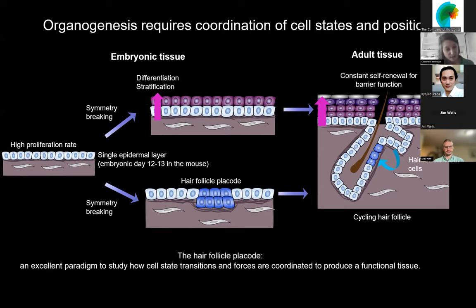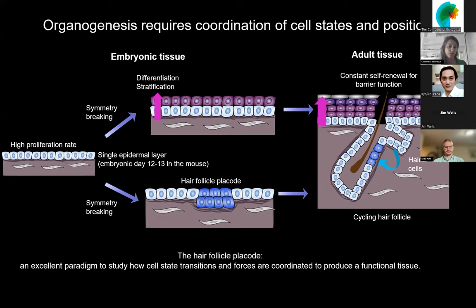The skin specifies around embryonic day 9, where at the beginning it's one homogeneous layer of epithelial cells lying on a basement membrane that separates the epithelial compartment from the underlying mesenchyme. Around embryonic day 13 to 14, there are two simultaneous symmetry-breaking events: stratification of the epidermis, where stem cells moving upward undergo differentiation to build upper layers, and development of the hair follicle placode, characterized by an initial thickening of the epithelium and acquisition of stem cell hair follicle markers. Those progenitors will further specify to become the follicle and, in the adult, become the cycling hair follicles.